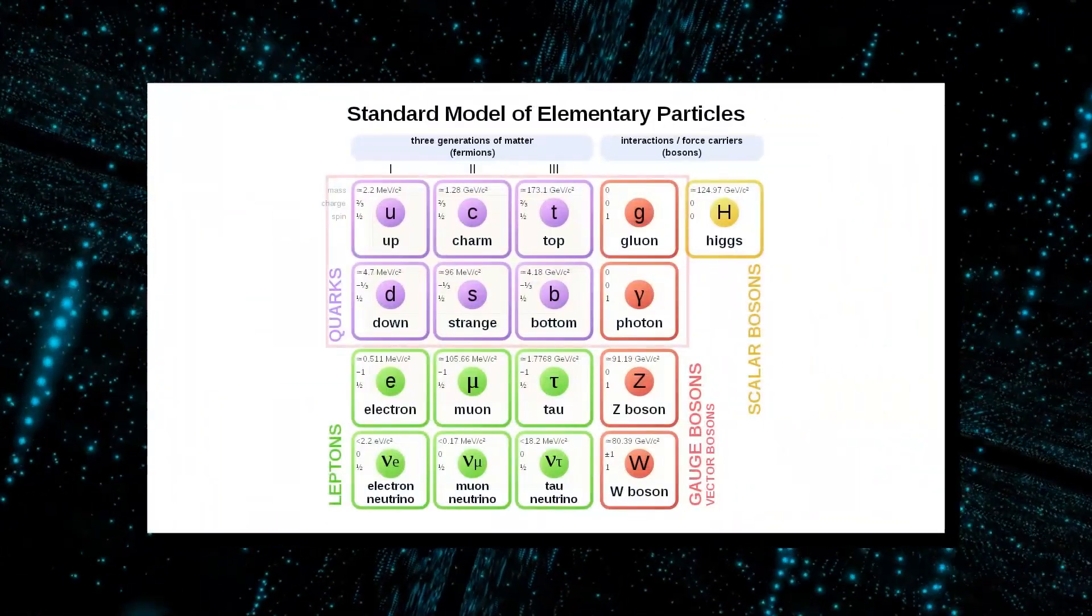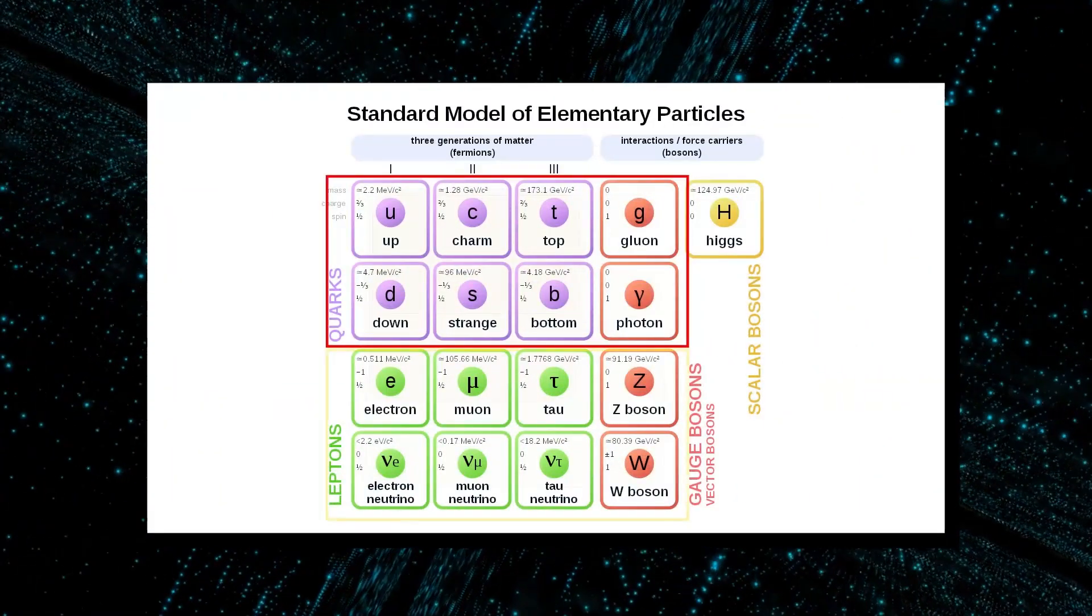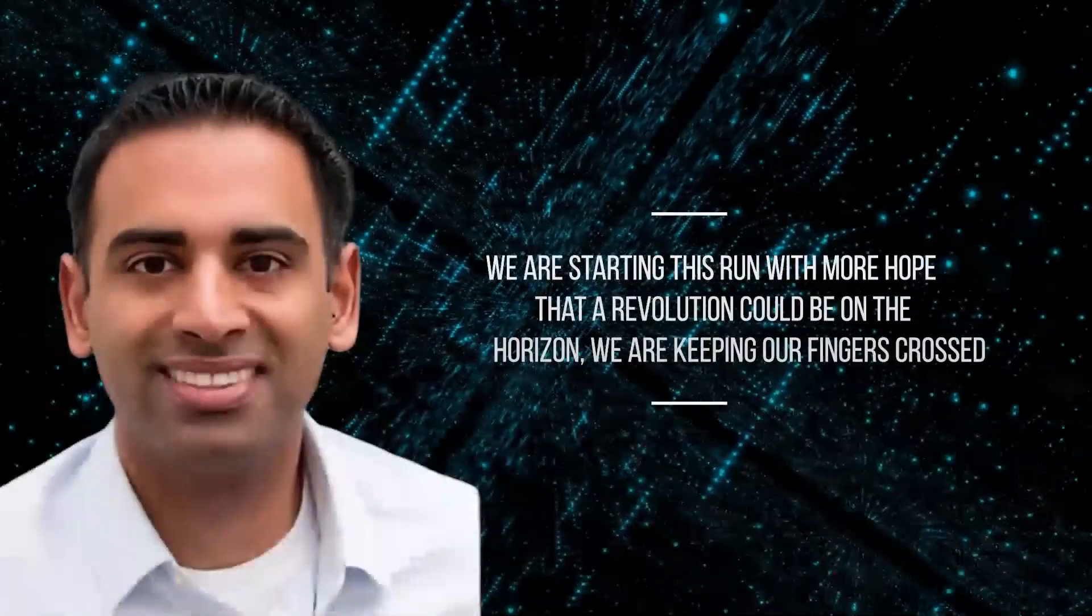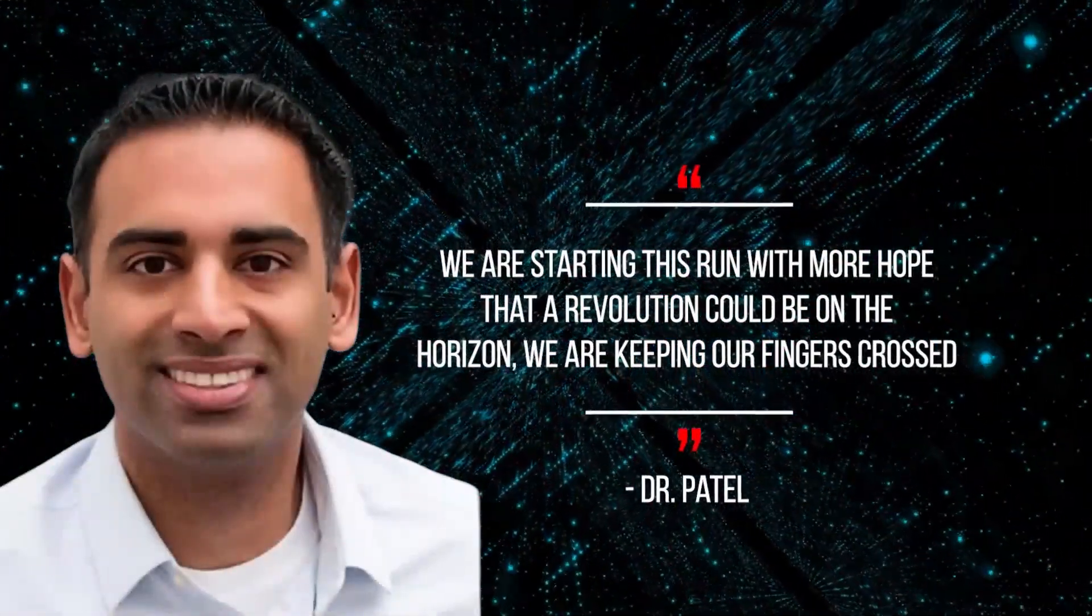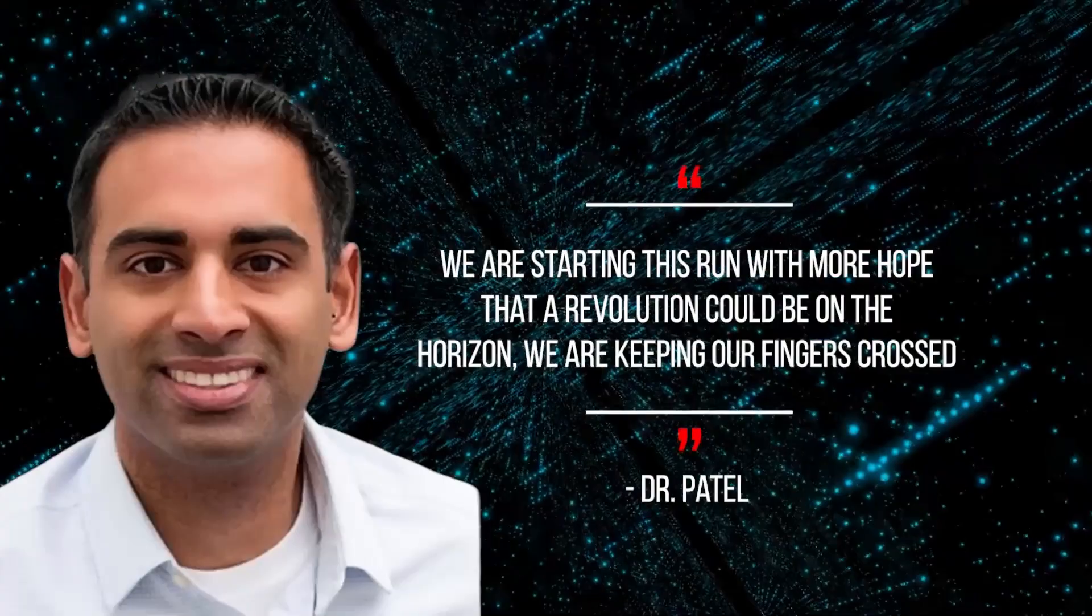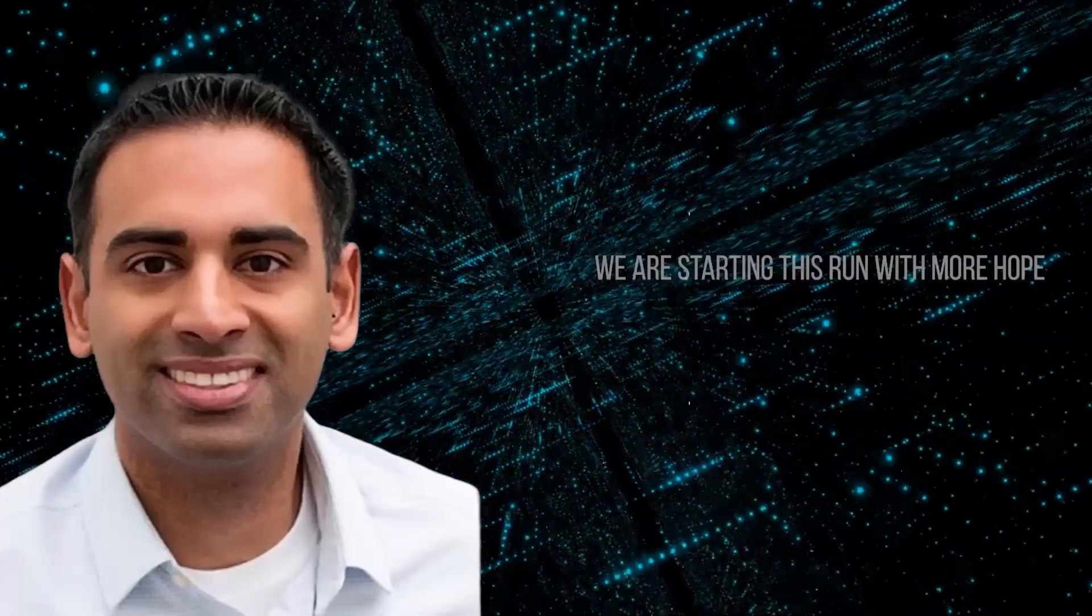Temptingly, there are six sorts of quarks and six different types of leptons. We are starting this run with more hope that a revolution could be on the horizon. According to Dr. Patel, we are keeping our fingers crossed.